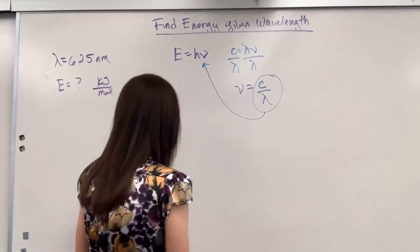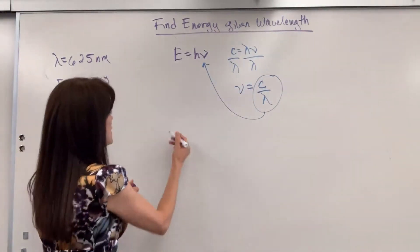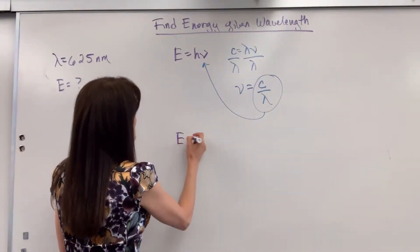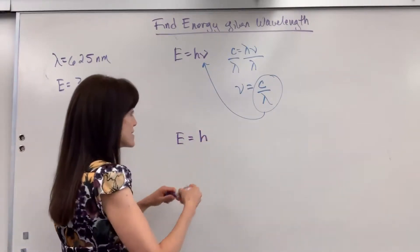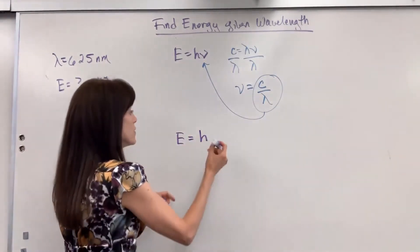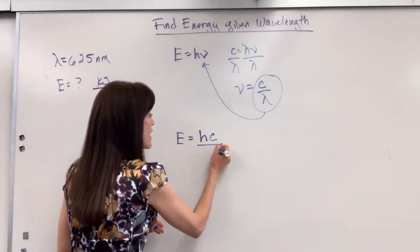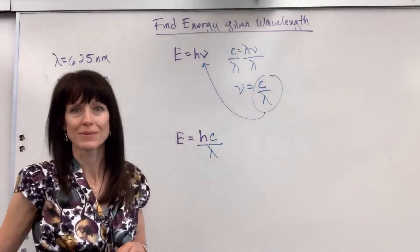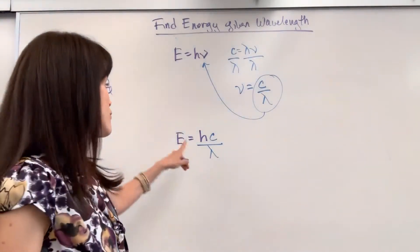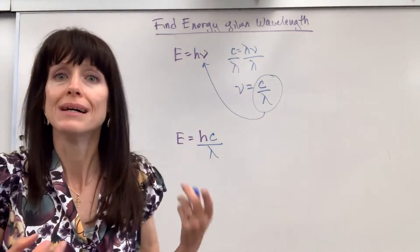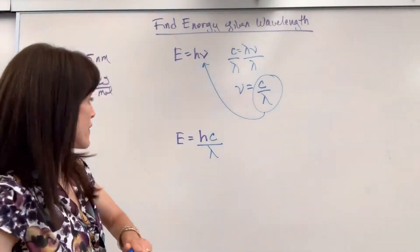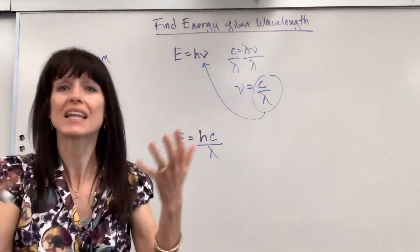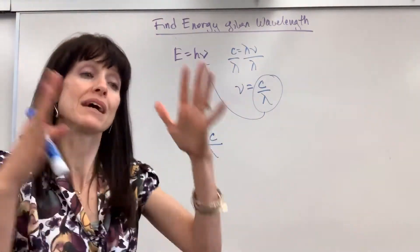And we will have, watch this, energy equals Planck's constant times, instead of writing nu, I can write speed of light divided by lambda. So there is a formula that relates energy to wavelength, to lambda.